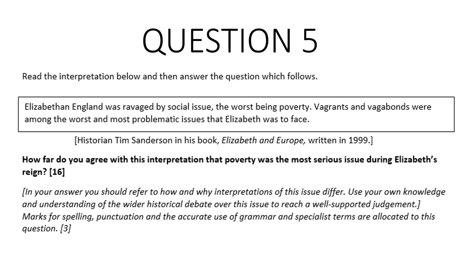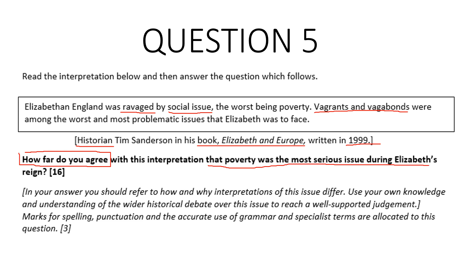When looking at this question, we need to first do our translations because there may be words like 'ravaged,' 'social issue,' 'vagrants and vagabonds' that we want to expand upon to show the examiner we have strong knowledge. We also have to identify the importance of Tim Sanderson being a historian writing in a book, and the fact that it was written in 1999. We should always use our BUG method: box our command word — 'how far do we agree?' — underline the key feature, which is poverty as the most serious issue during Elizabeth's reign, and glance back at 16 to know how many minutes are remaining. We should always look at the italicized text, which tells us to refer to how and why other interpretations differ, and to use our own knowledge to reach a well-supported judgment.